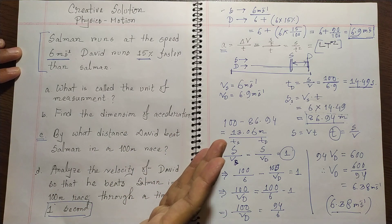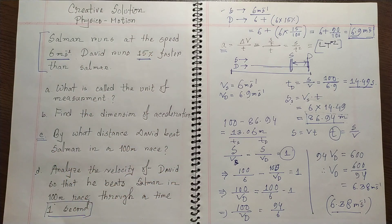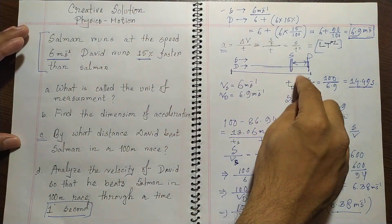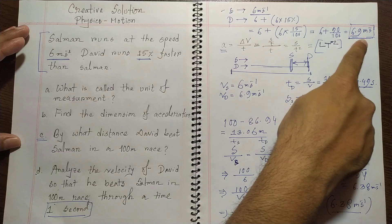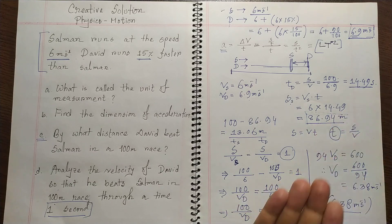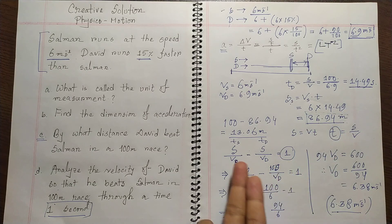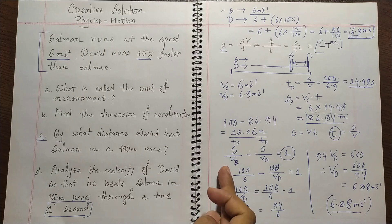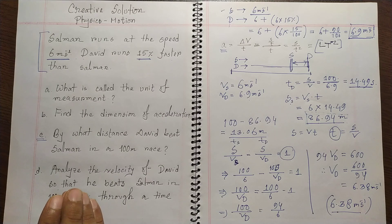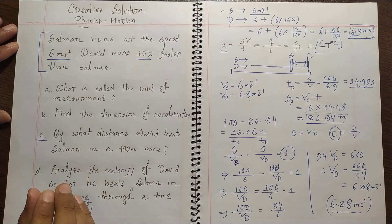If you find this type of problem, try to visualize the process and think clearly. David and Salman are in a race with different speeds, so David will take less time than Salman. By comparing the time requirements for both runners, we can work through the calculation. I hope you understood — please comment below and write to me if you have any further questions. Take care, see you in the next tutorial. Bye.